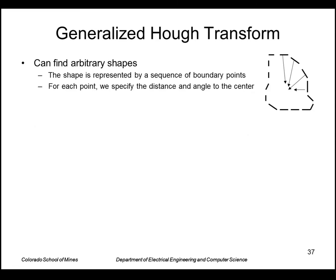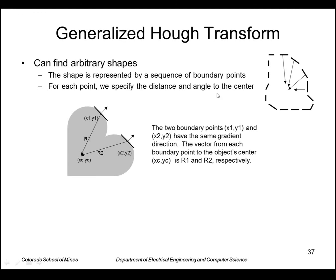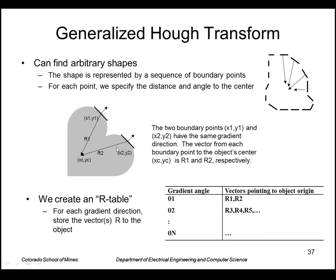The generalized Hough transform is a nice extension to line and curve finding — you can find arbitrary shapes. We do some pre-processing: we take our shape, represent it by a set of boundary points, and for each boundary point we compute the distance and angle to the center of the shape. For example, two points with the same gradient angle each have a vector to the object center, R1 and R2. We create an R-table: for each possible gradient direction, we store the vectors pointing to the object center.